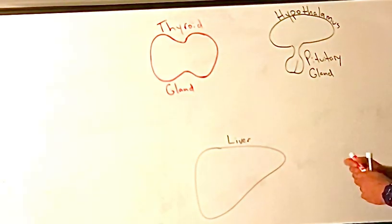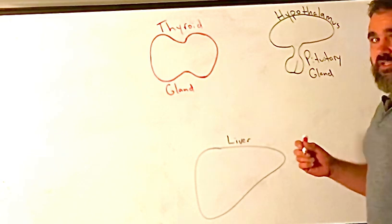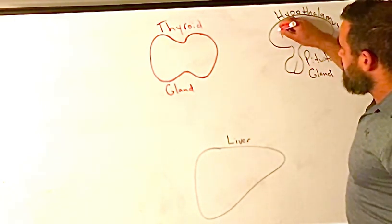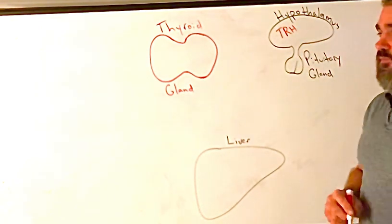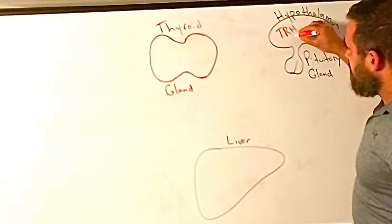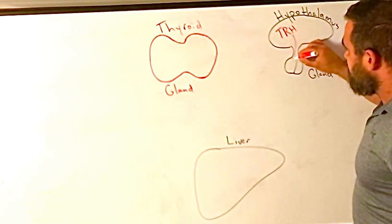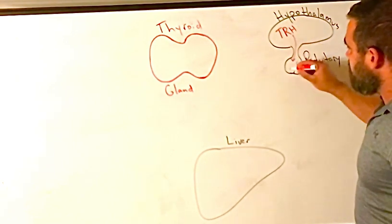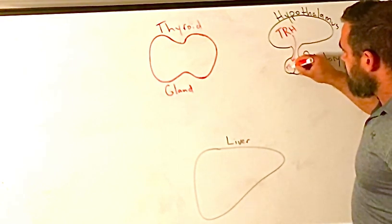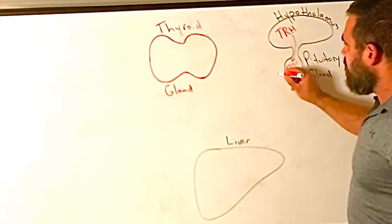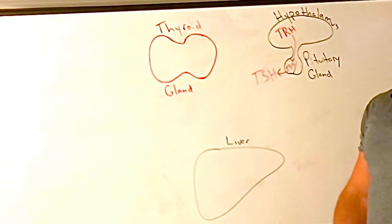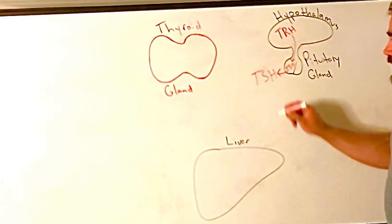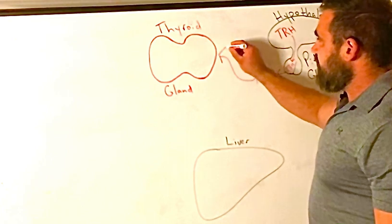The hormone made in the hypothalamus that initiates this whole pathway is TRH, thyroid-releasing hormone. That's going to trickle through the little portal system to the anterior pituitary. Make sure you know it's anterior, and this is going to release a hormone called TSH, thyroid-stimulating hormone. You can guess what that does—it's going to stimulate the thyroid gland.